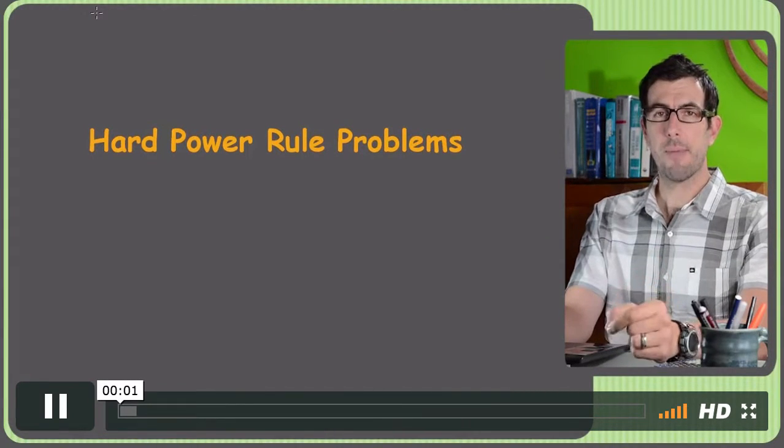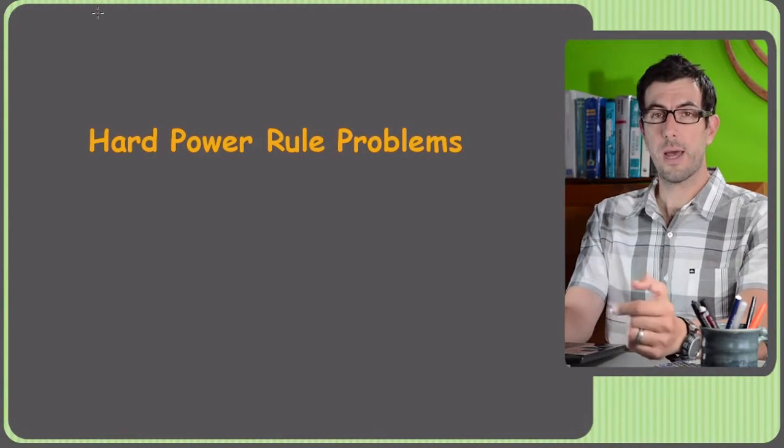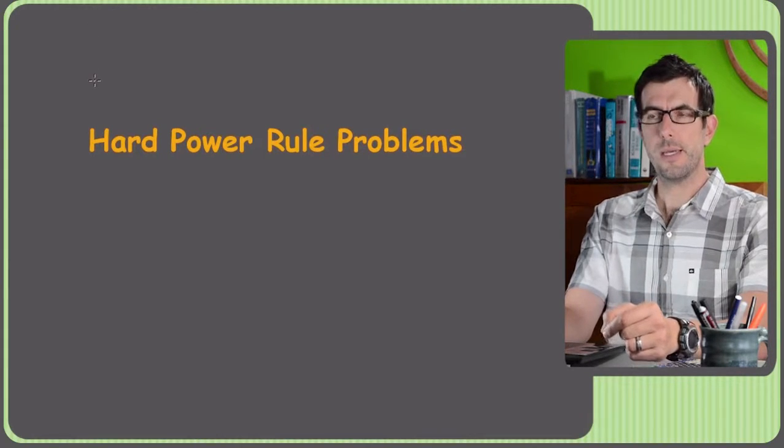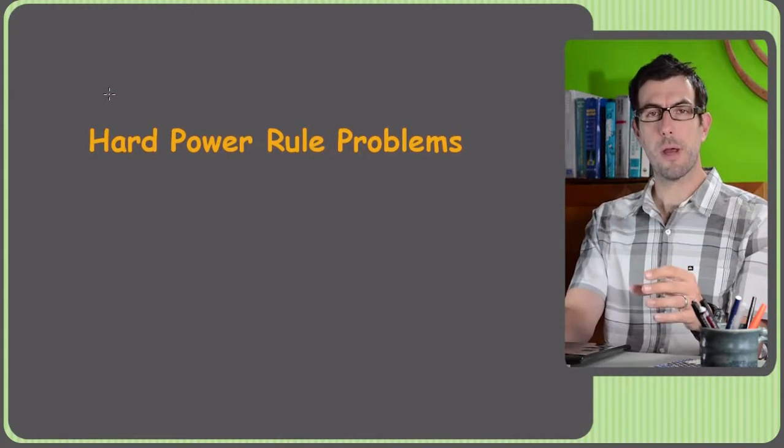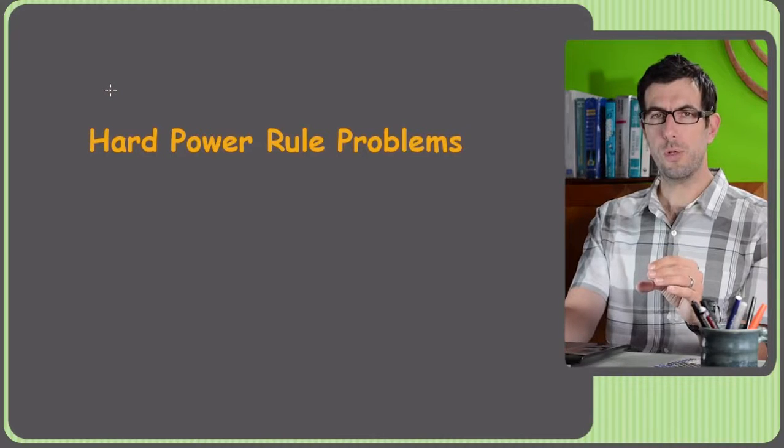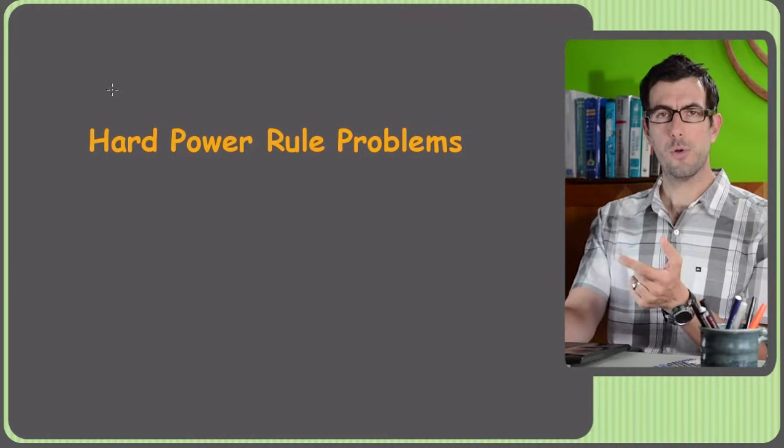Alright, I threw this video together because a common problem I see when I'm tutoring students in calculus one-on-one is that sometimes if something looks like a product rule or looks like a quotient rule, students automatically go for the quotient rule or product rule.